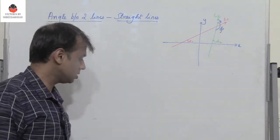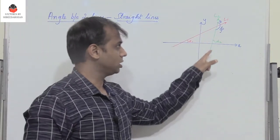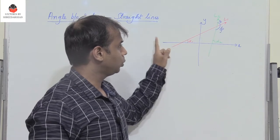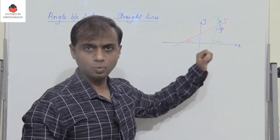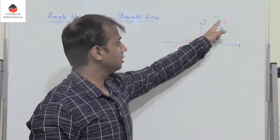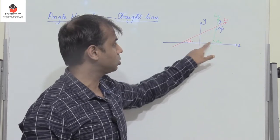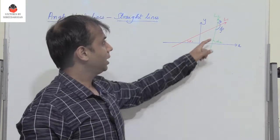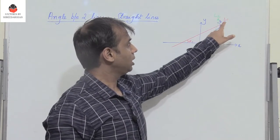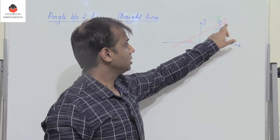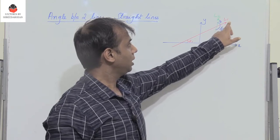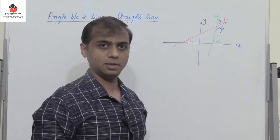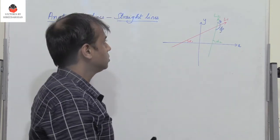Let us consider two lines l1 and l2 as shown here, where l1 makes an angle alpha1 with respect to the horizontal x-axis, and line l2 makes an angle alpha2 with respect to the x-axis. The angle between l1 and l2 is theta, and the other angle between l1 and l2 is phi.